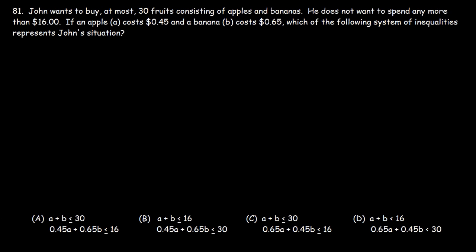Now let's start with the first part of the problem. John wants to buy at most 30 fruits that consist of apples and bananas. So we could say that A plus B cannot exceed 30. So it has to be less than or equal to 30. It could equal 30, just not be more than 30.